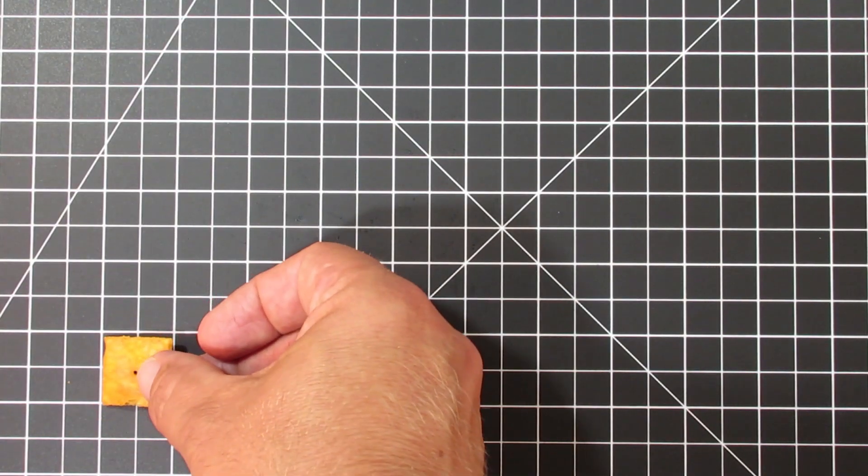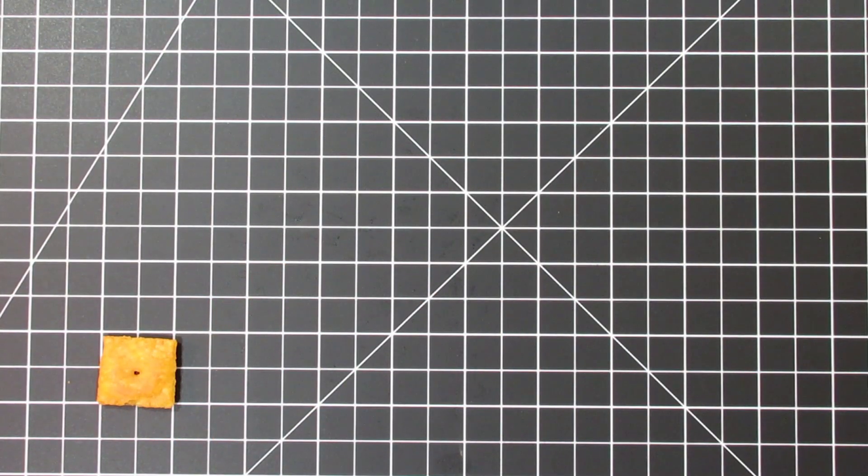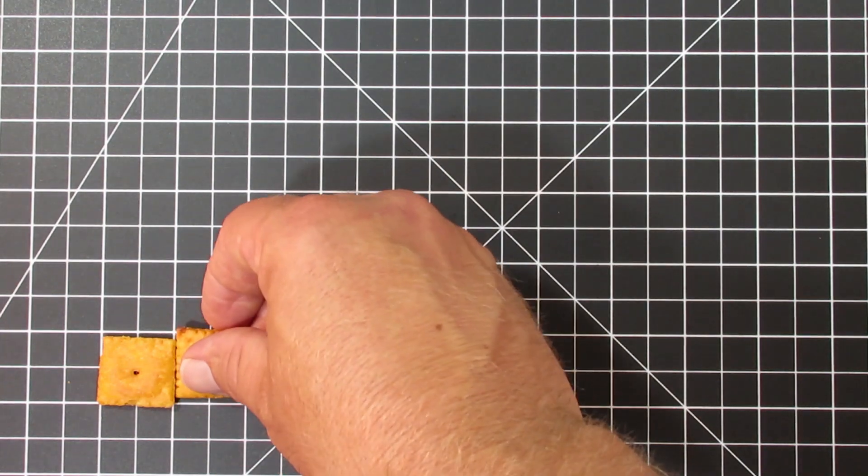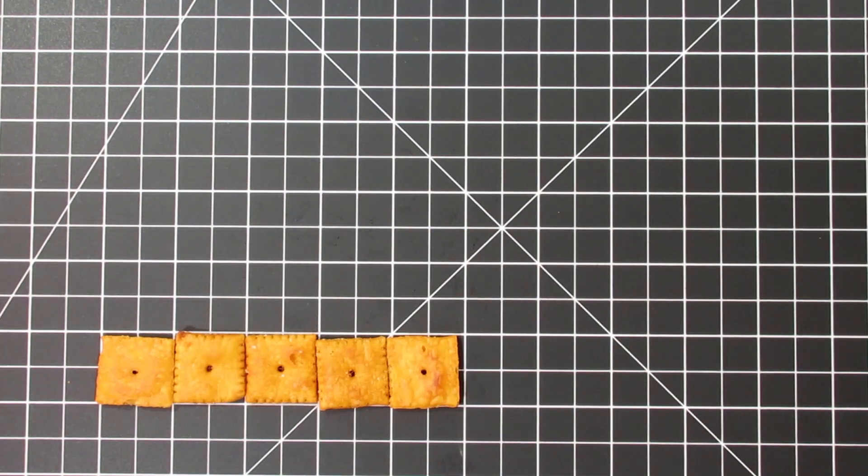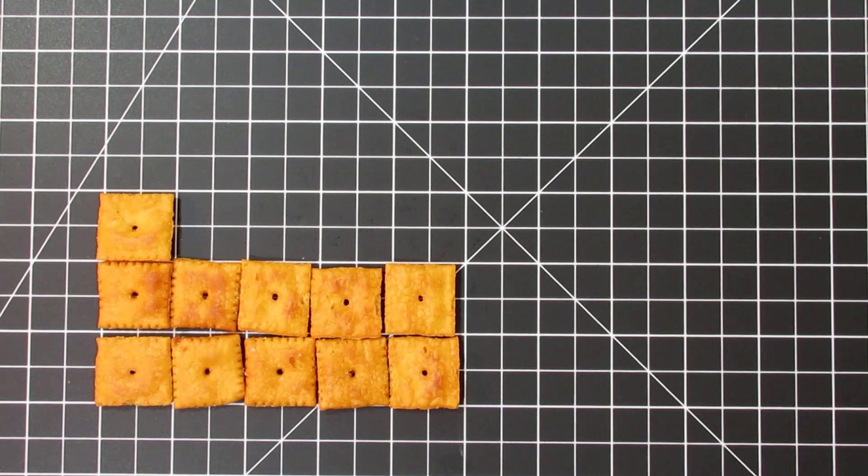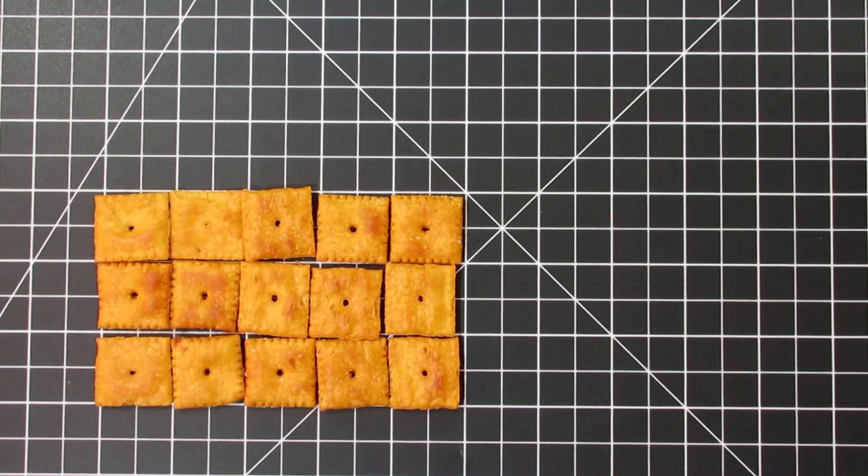If we had a rectangle that, in this example, has a base of 5 and a height of 3, we could take our 5 times our 3, we're going to get 15 Cheez-its, or if this was in centimeters, 15 centimeters squared.